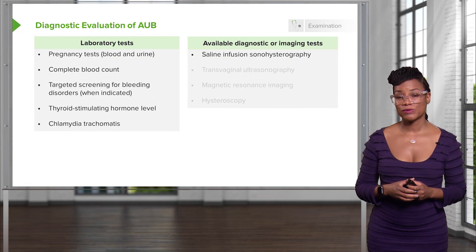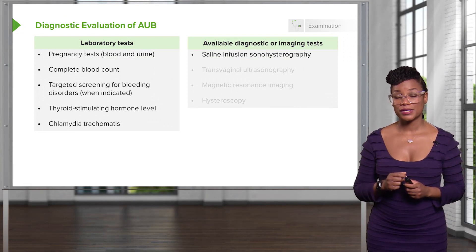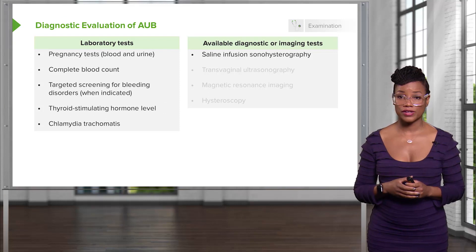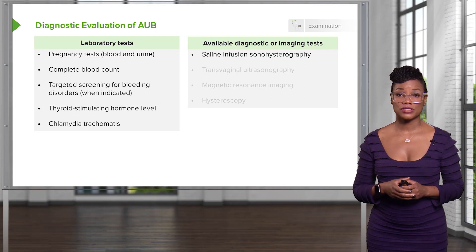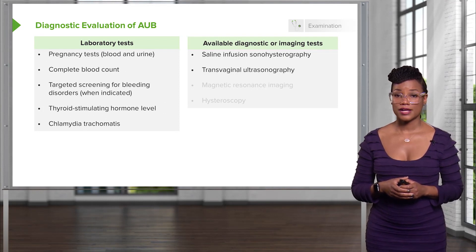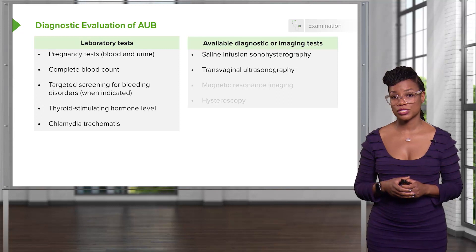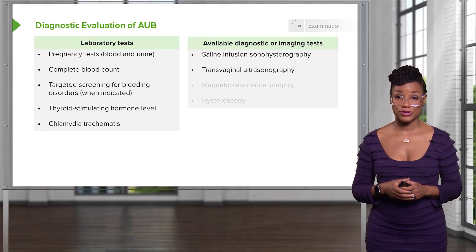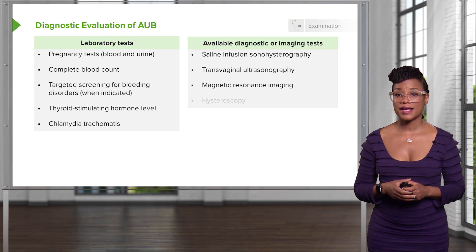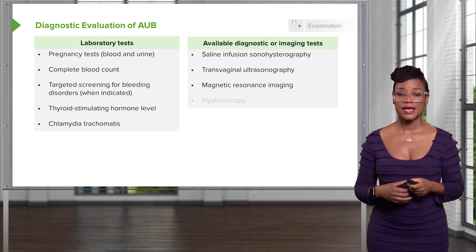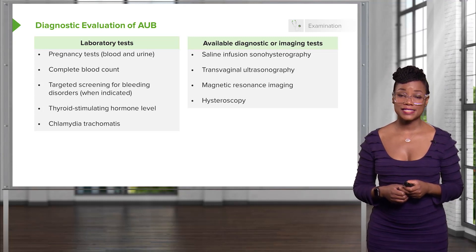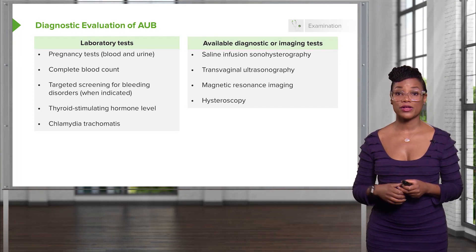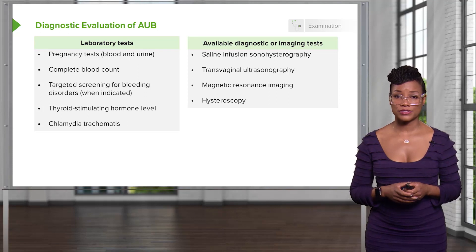In terms of diagnostic tests, a saline infusion sonohysterography is very important and can show us a polyp, a fibroid, or any other lesion that could be causing the bleeding. A transvaginal ultrasound is also helpful as we can actually measure the size of the uterus. An MRI is sometimes helpful, especially when you have a large uterus that can be caused by leiomyomas or adenomyosis. And lastly, hysteroscopy, where we insert a small camera through the vagina into the cervix and into the uterus to actually visualize any pathology that could be there.